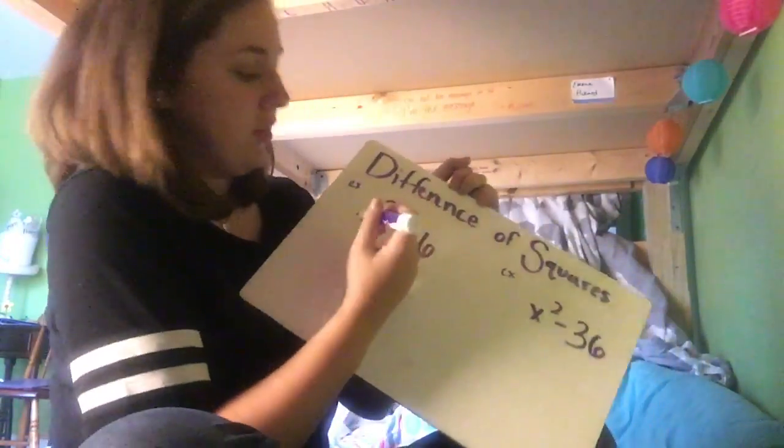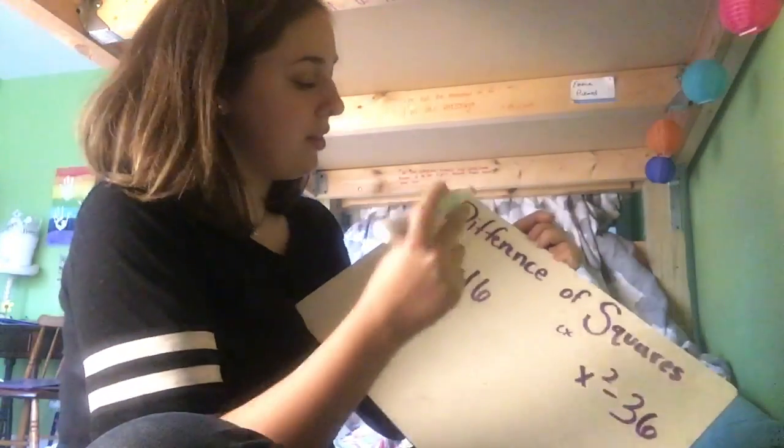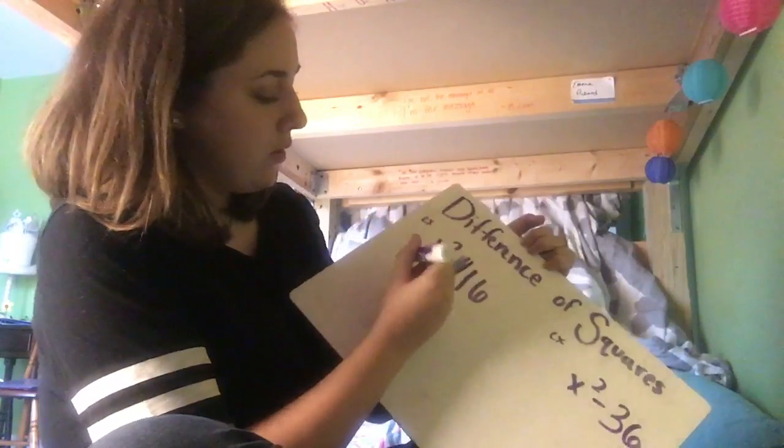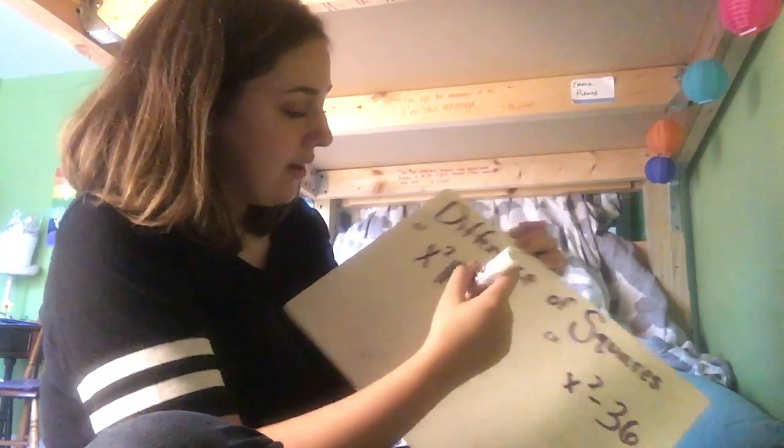So, this is our first example, x squared minus 16. Let's look at them without the minus sign for a minute. Square root this side and this side.